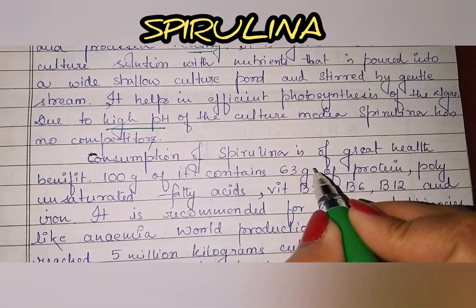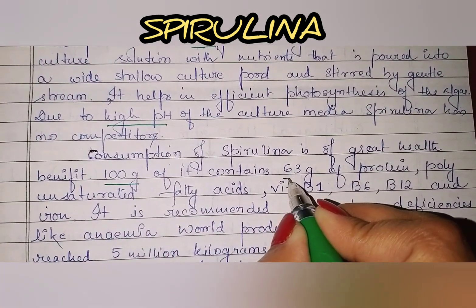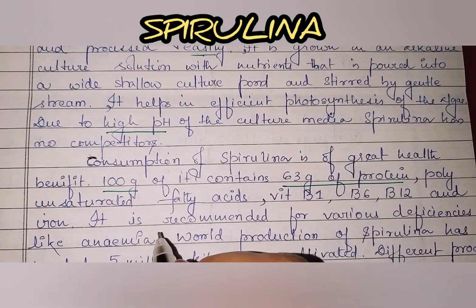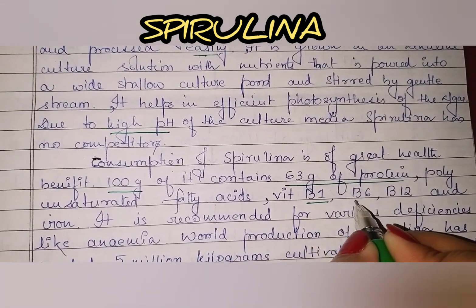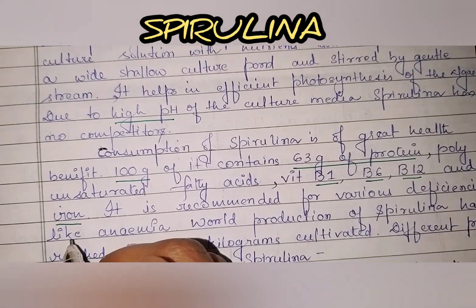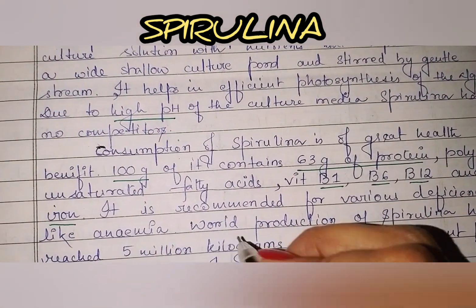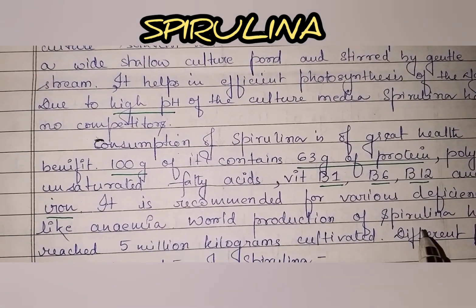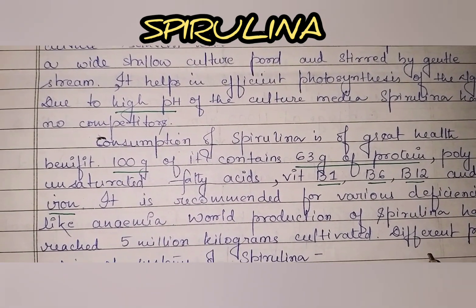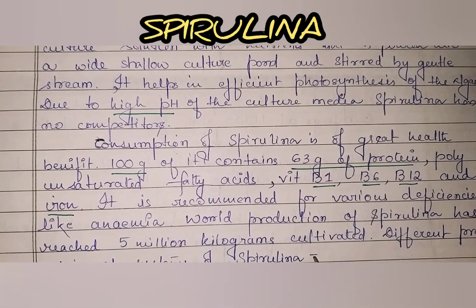Consumption of spirulina is of great health benefit. 100 grams of it contains 63 grams of protein. Other nutrients include polyunsaturated fatty acids, vitamin B1, B6, B12 and it is fortified with a lot of iron. It is recommended for various deficiencies like anemia. World production of spirulina has reached 5 million kilograms cultivated.